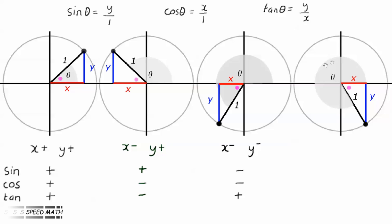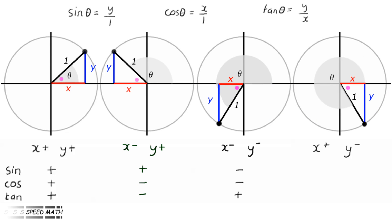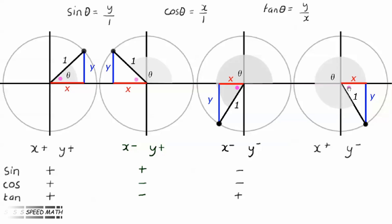Looking at the fourth diagram, if we rotate the radius around still further so it sits in quadrant 4, the angle it represents is somewhere between 270 and 360 degrees. X is positive and y is negative, so sin theta is minus y over 1, therefore negative. Cosine theta is plus x over 1, therefore positive. Tan theta is minus y over plus x, therefore negative.